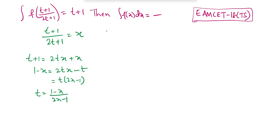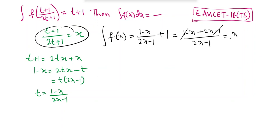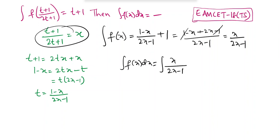Substituting into f((t+1)/(2t+1)) = x, we find f(x). The value of (t+1)/(2t+1) evaluated with t = (1-x)/(2x-1): numerator becomes (1-x+2x-1)/(2x-1) = x/(2x-1). So f(x) = x/(2x-1). Now find integration of f(x) dx = integration of x/(2x-1) dx.